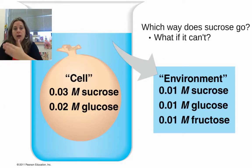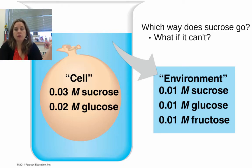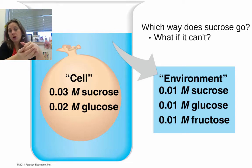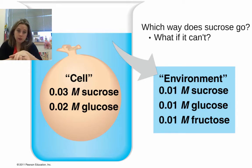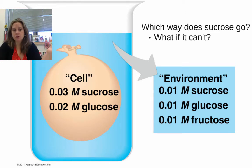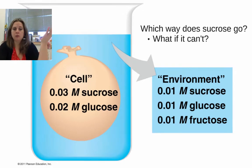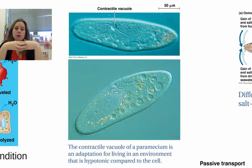Consider the contents of a model cell. In which way can sucrose go? If sucrose can't cross, water will move instead. If the environment has sucrose, glucose, and fructose outside while the cell has sucrose and glucose inside, the greater solute concentration inside the cell means water would move in.